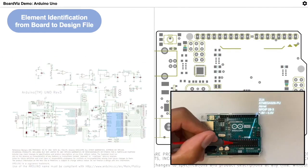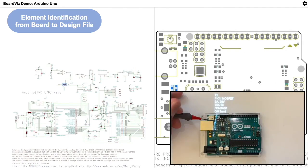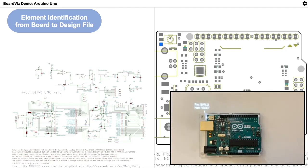We can also identify components on the schematic and layout view directly by pointing on the PCB, and similarly identify pins and nets by pointing on the PCB. Now that we have these coordinated interactions, we can take them as building blocks and synthesize workflows that reflect the workflows participants discussed during the needs-finding study.